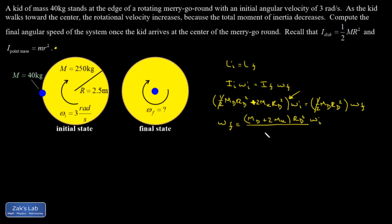And then in my denominator, mass of the disc, radius of the disc squared. And it turns out, just because the kid started right on the edge, my radius is going to cancel out in this case. So I get just mass of the disc plus twice the mass of the kid over the mass of the disc times omega initial.